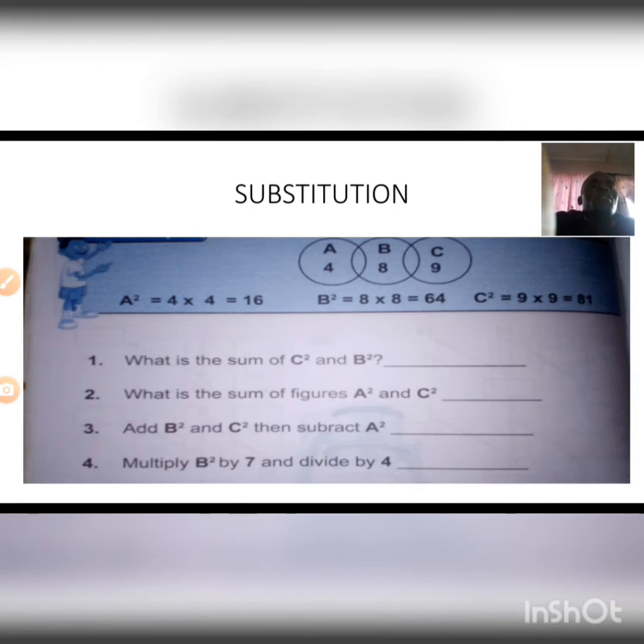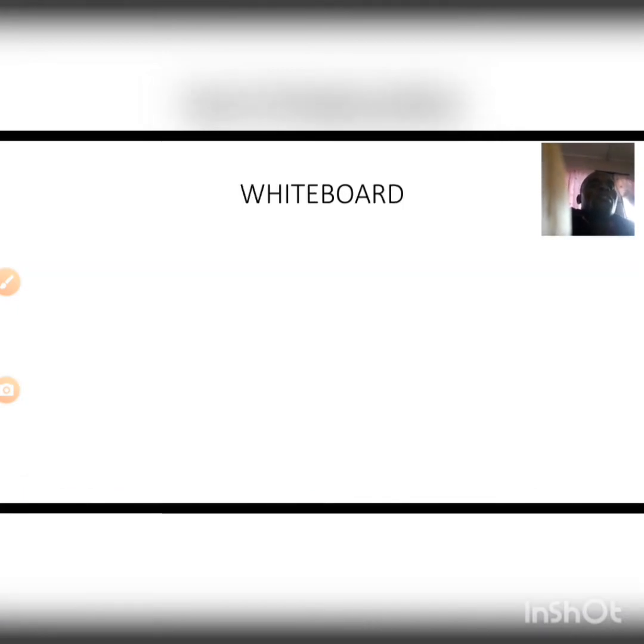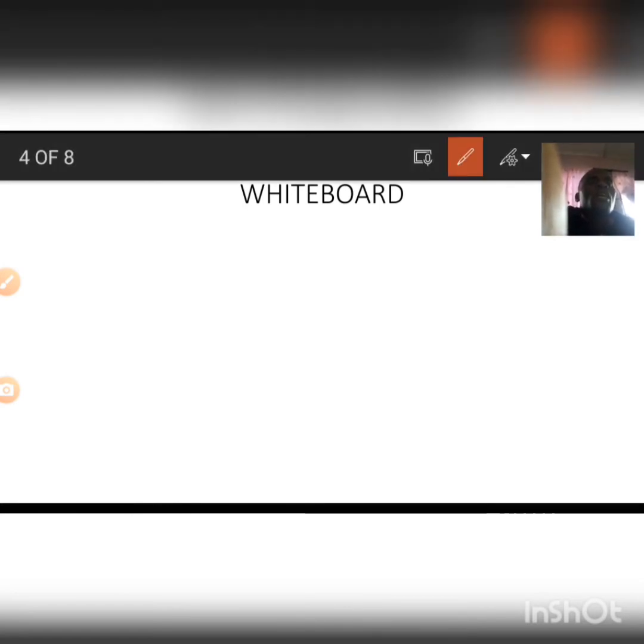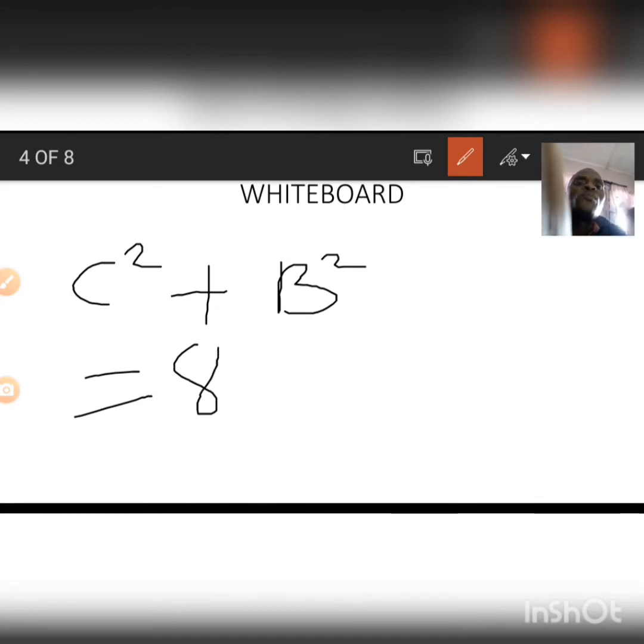So when we are asked to find the sum of C squared and B squared, it simply means we are to add C squared to B squared. C squared is 81 and B squared is 64. Now that means C squared plus B squared is going to be 81 plus 64.